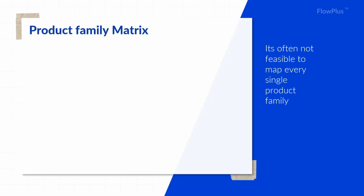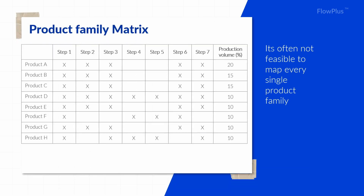A good place to start is what is called a product family matrix. It shows what products follow what steps, so you can group products and decide what to map. In this example, a company makes eight main products. Products A, B, C, E and G follow the same process steps and make up roughly 70% of all production volume, so the scope of the value stream map should be for those products.